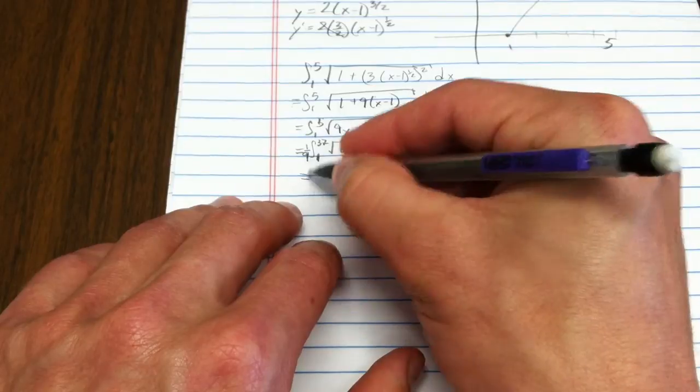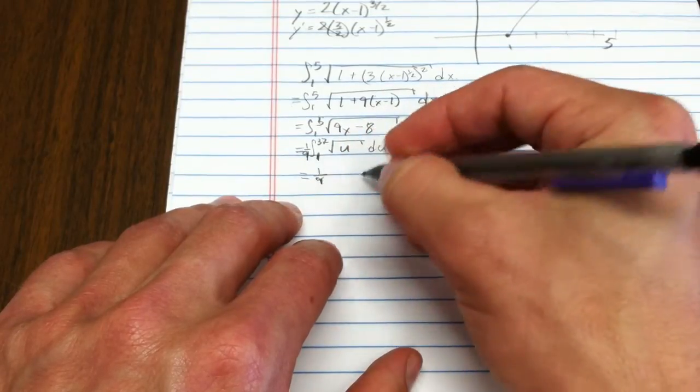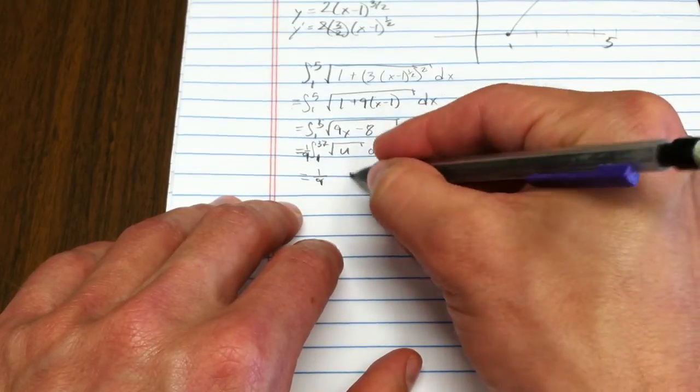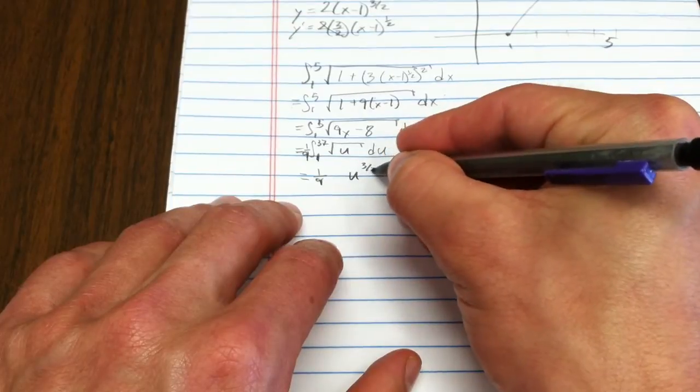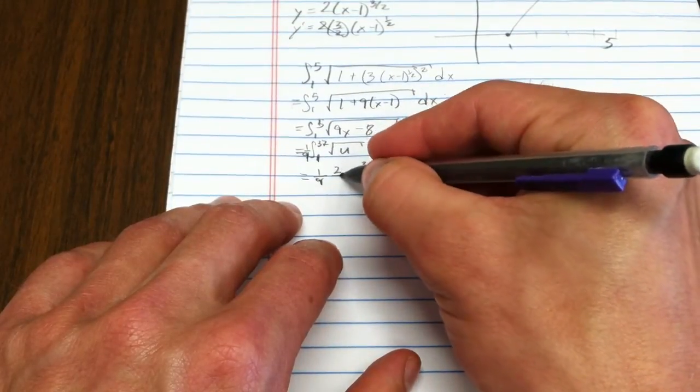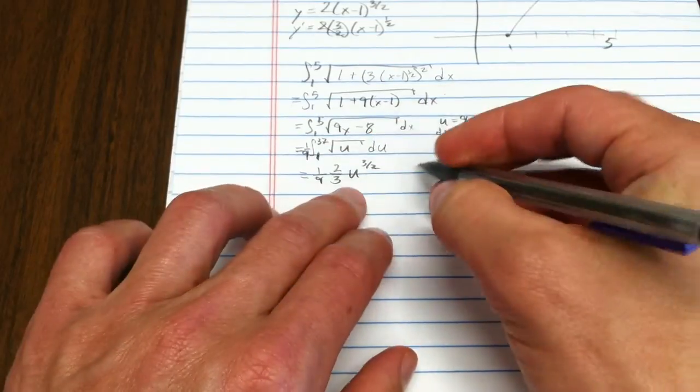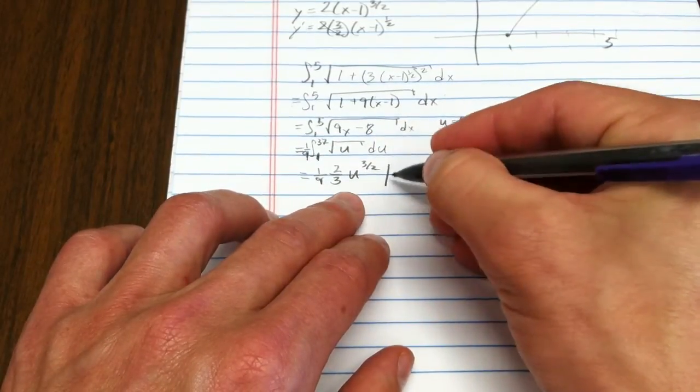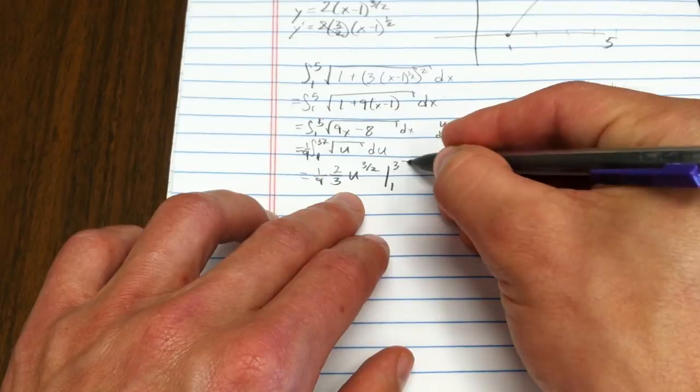I get 1/9 times u^(1/2), when integrated that's u^(3/2), and then I put 2/3 out there. That's the integral evaluated from 1 to 37.